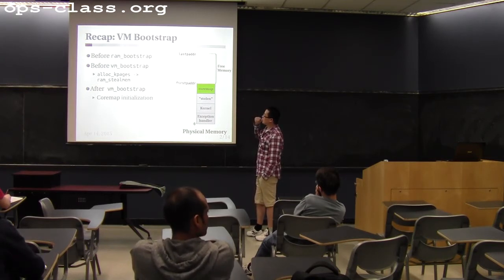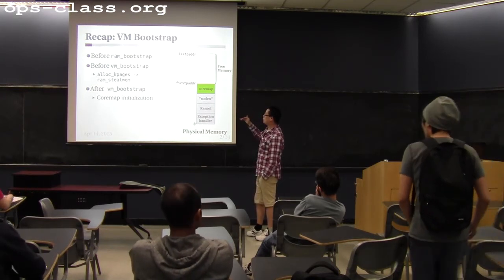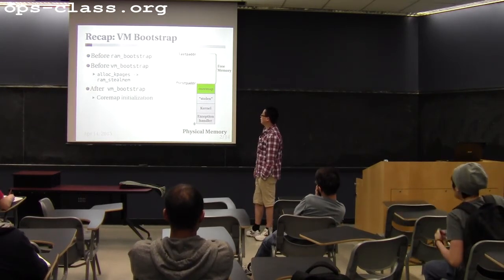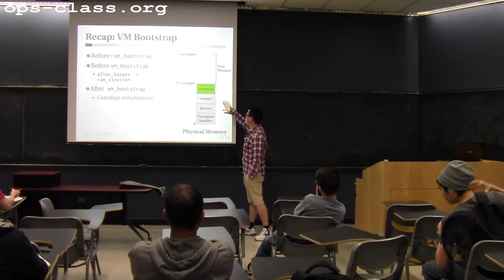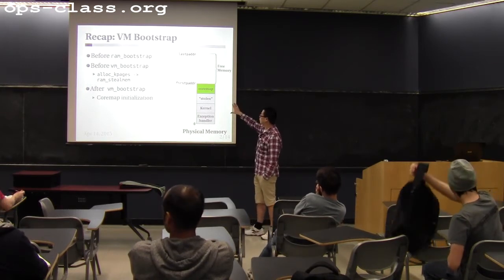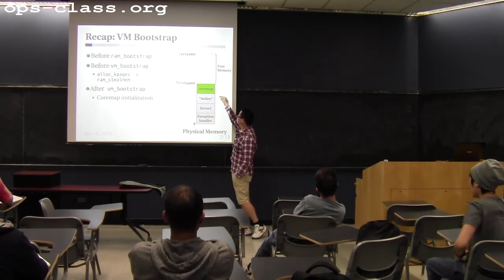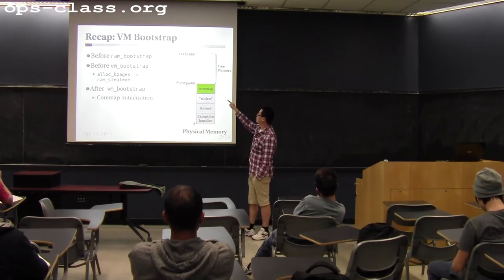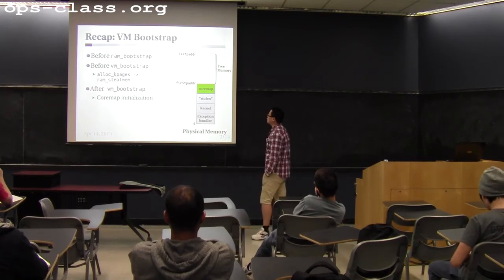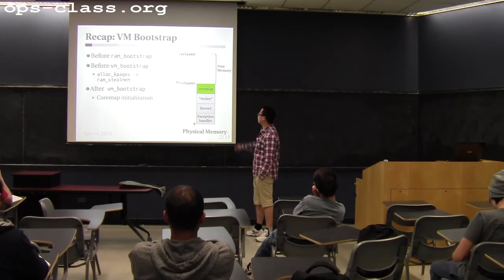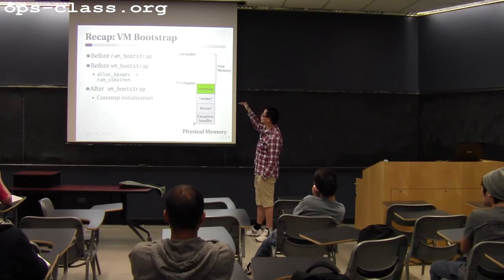After bootstrap we know how much memory we have and what's the end of the kernel, which is the start of the available physical address. At this point you can call rem_still_memory to keep allocating some memory before you have a functional coremap. When you reach VM bootstrap, part of the physical memory has already been occupied, and you know the first available physical address by looking at the first_paddr variable in ram.c.